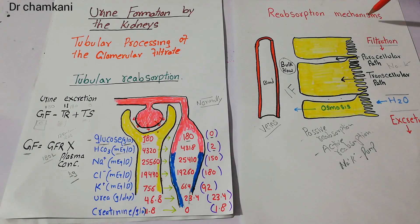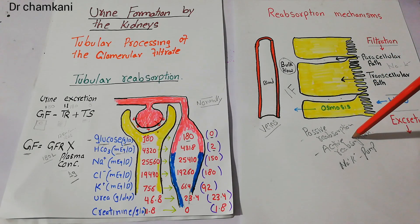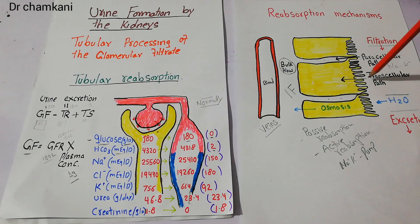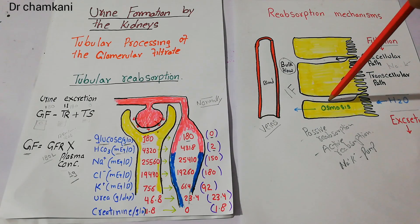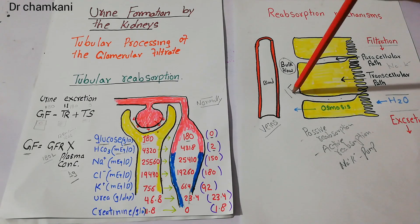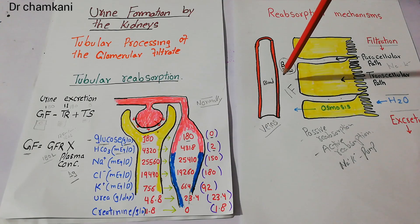To summarize: reabsorption mechanisms may be passive or active reabsorption. Passive reabsorption needs no energy, while active reabsorption requires energy. Solutes and water may move through the paracellular path via tight junctions, or through the transcellular path via cell membranes, then into the intercellular space, then the interstitial space, and finally through bulk flow into the peritubular capillaries.